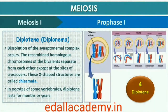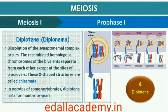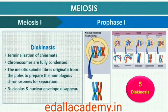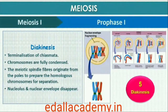The beginning of diplotene is recognized by the dissolution of the synaptonemal complex and the tendency of the recombined homologous chromosomes of the bivalents to separate from each other except at the sites of crossovers. These X-shaped structures are called chiasmata. In oocytes of some vertebrates, diplotene can last for months or years. The final stage of meiotic prophase I is diakinesis, which is marked by terminalization of chiasmata. During this phase the chromosomes are fully condensed and the meiotic spindle is assembled to prepare the homologous chromosomes for separation. By the end of diakinesis, the nucleolus disappears and the nuclear envelope also breaks down. Diakinesis represents the transition to metaphase.